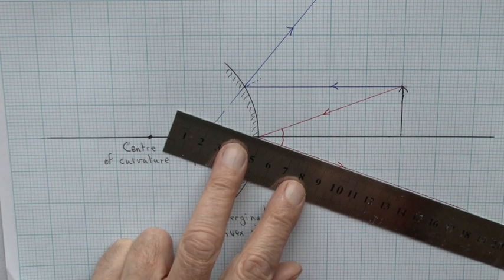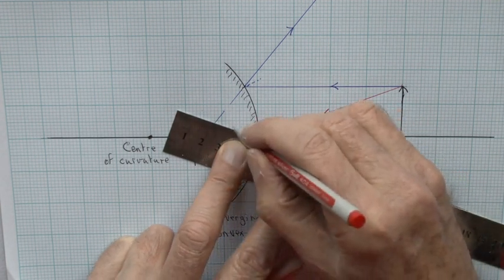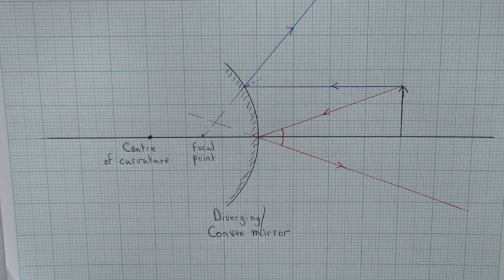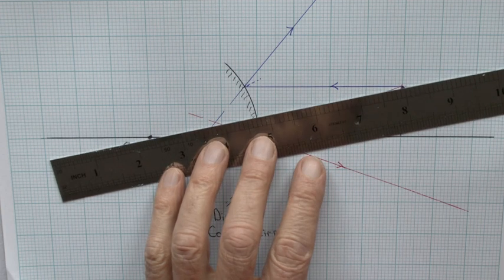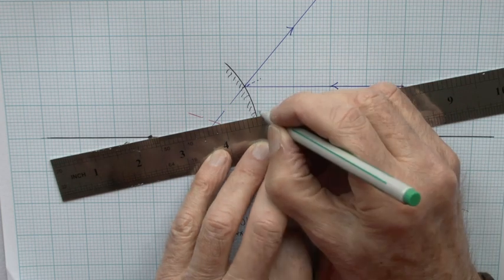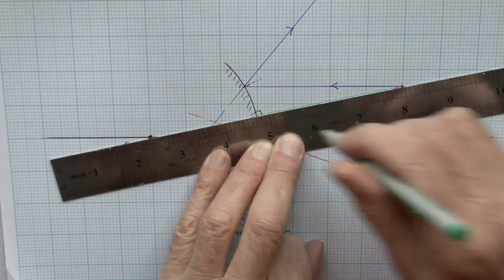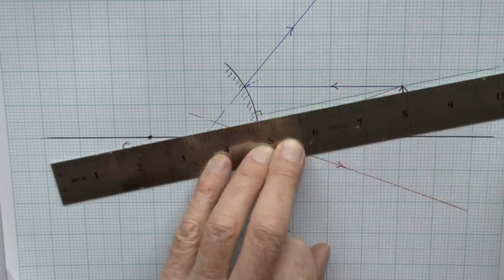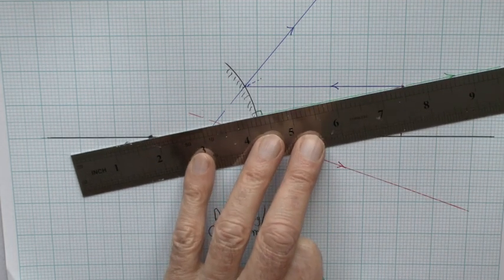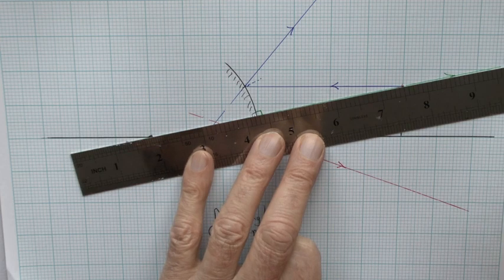I'll draw in a third and final ray of light from the top of the object going towards the center of curvature. That means it meets the mirror surface at right angles and will reflect straight back along its own path. Again, that seems to be coming from behind the mirror, intersecting with the other two points.